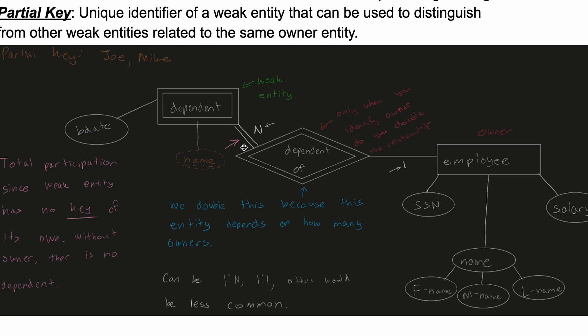So the dependents are dependent of the employee. For our dependents, we have the birth date and then we have a name for it. Now we have to have a key for this, right, even though it's a weak entity, because the reason why it's a weak entity is because it relies on our employee.